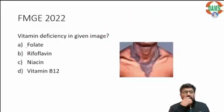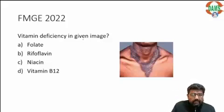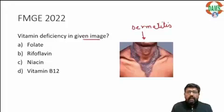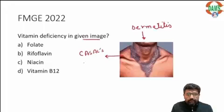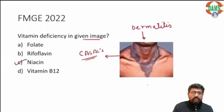Next question — again an FMG question on the topic of niacin deficiency. Which vitamin deficiency is given in the image? This image is showing dermatitis, and this is classically known as Casal's necklace. This is seen in niacin deficiency.